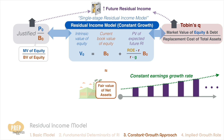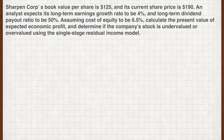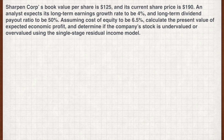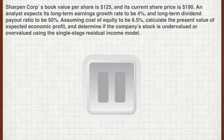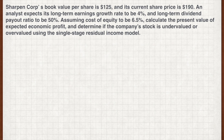Now that we're done with the theory, let's jump into some calculations. Sharpen Corp's book value per share is $125 and its current share price is $190. An analyst expects its long-term earnings growth rate to be 4% and long-term dividend payout ratio to be 50%. Assuming cost of equity of 6.5%, calculate the present value of expected economic profit and determine if the stock is undervalued or overvalued using the single-stage residual income model.